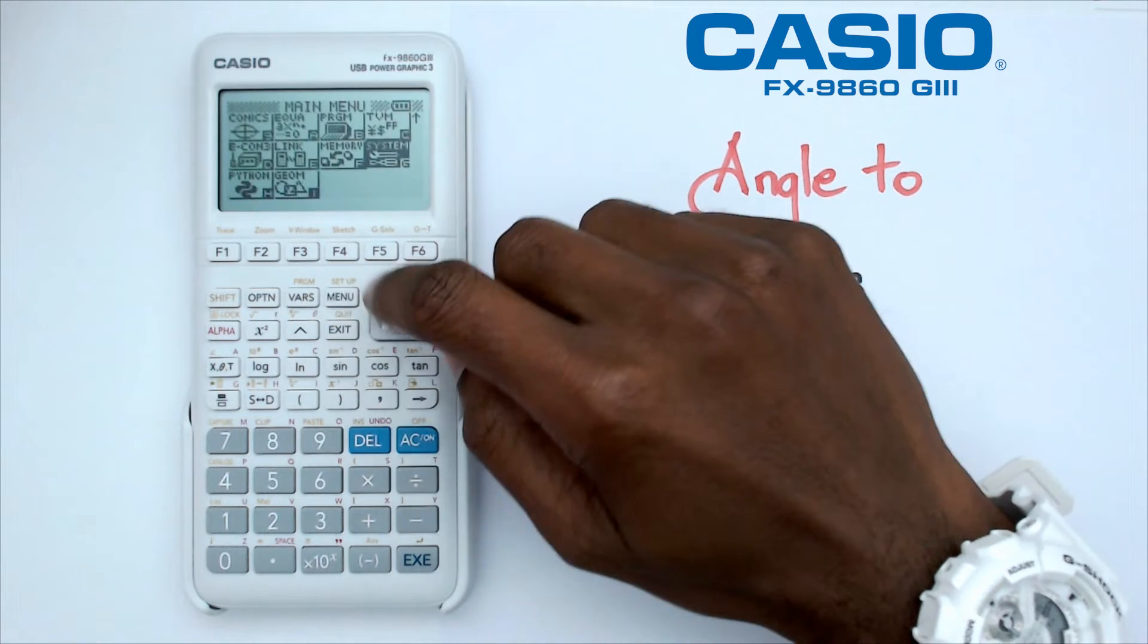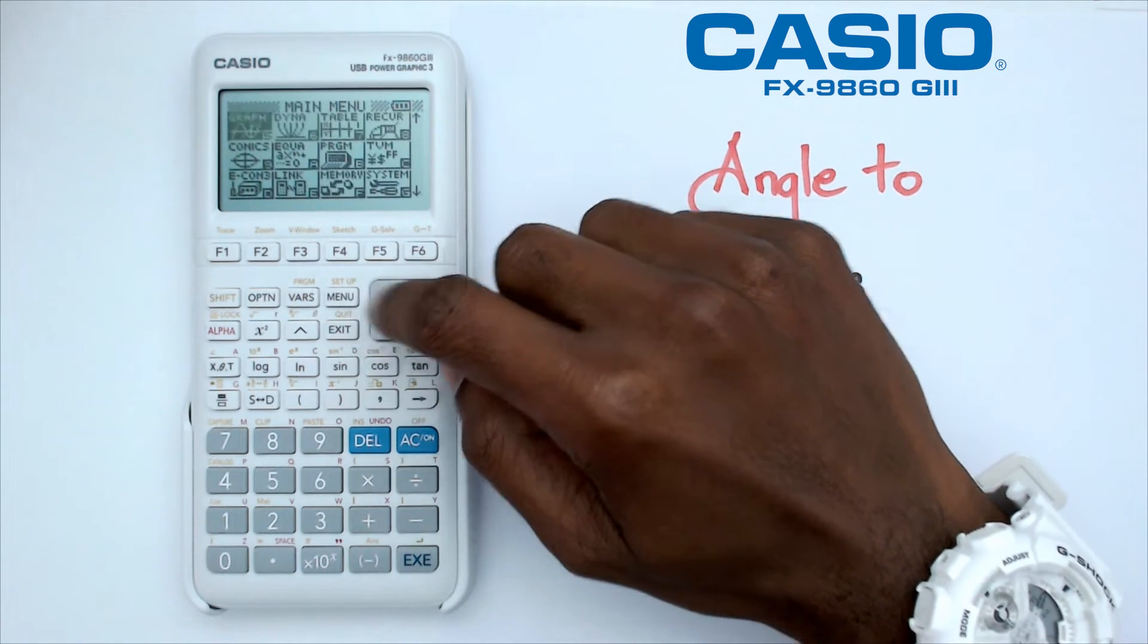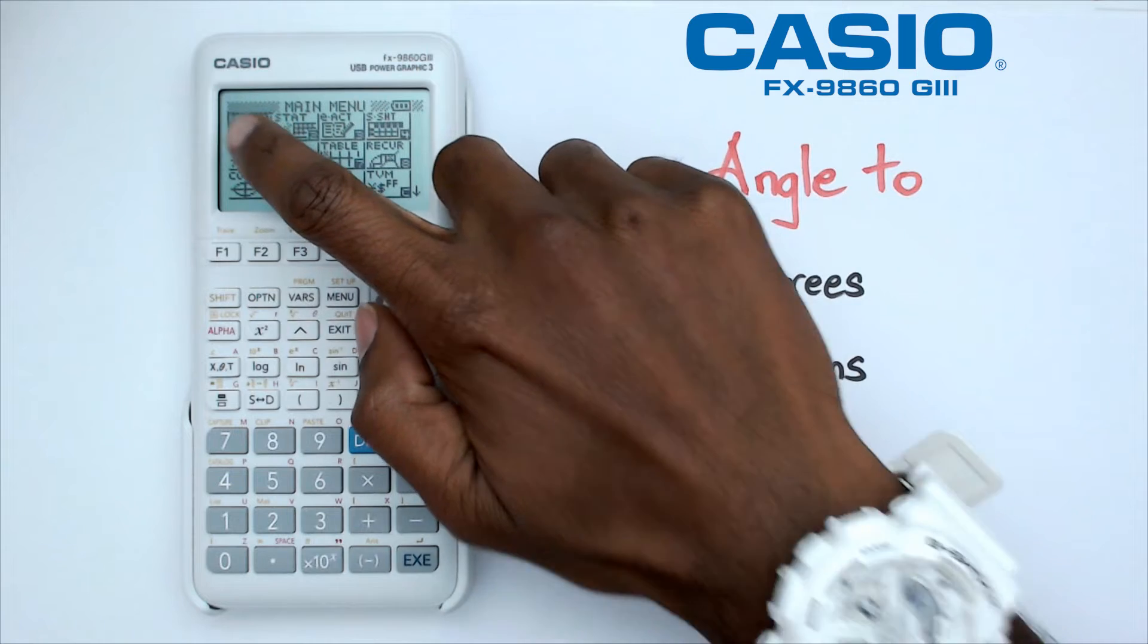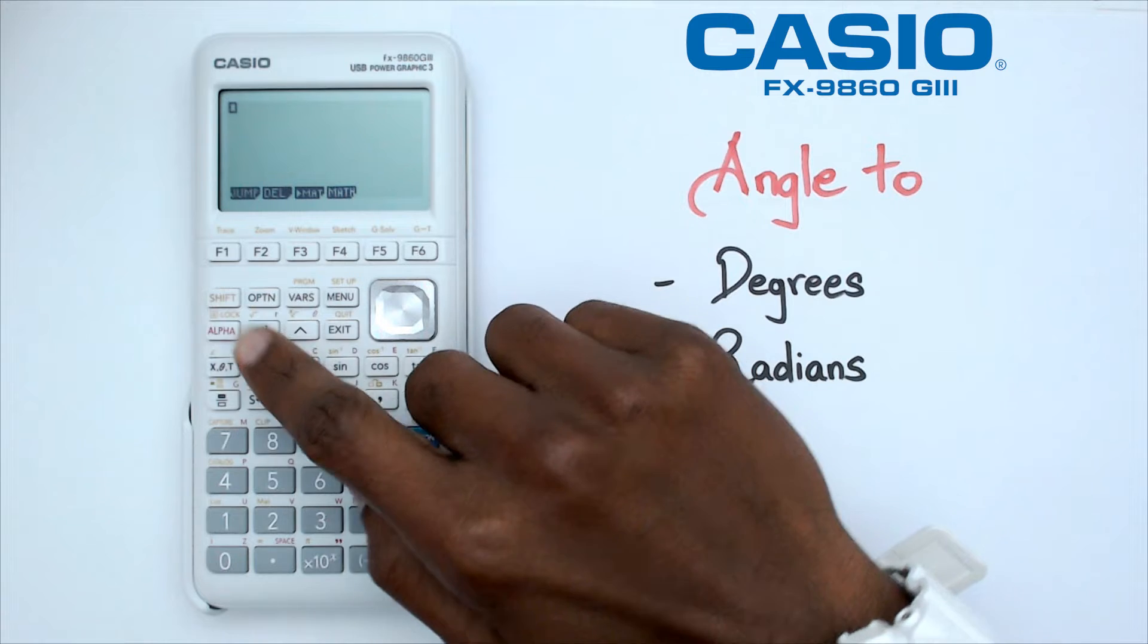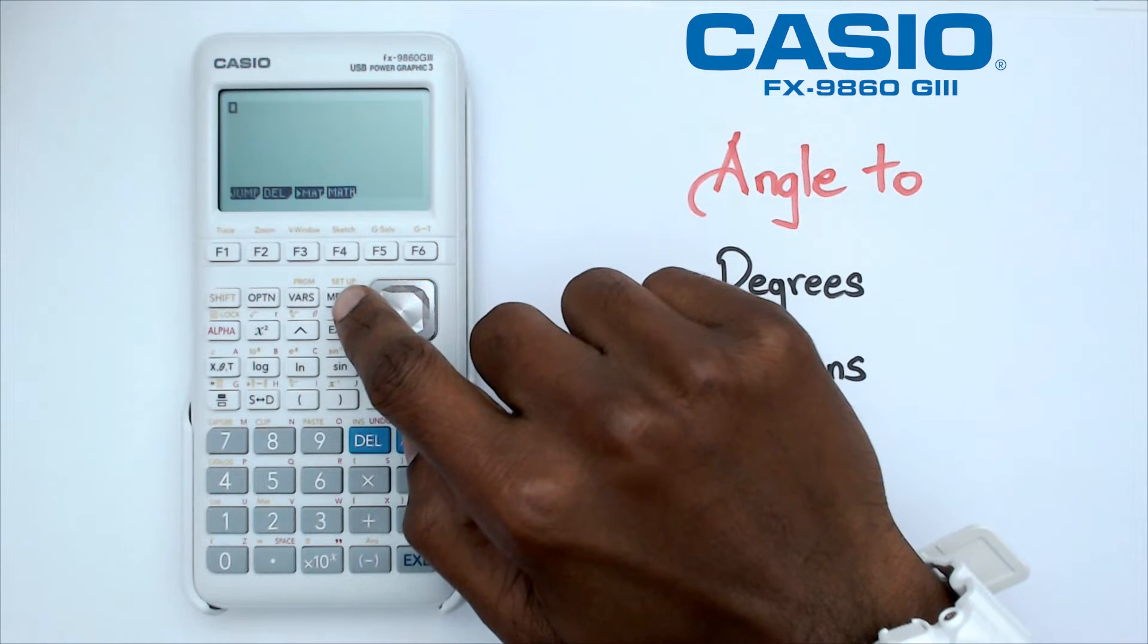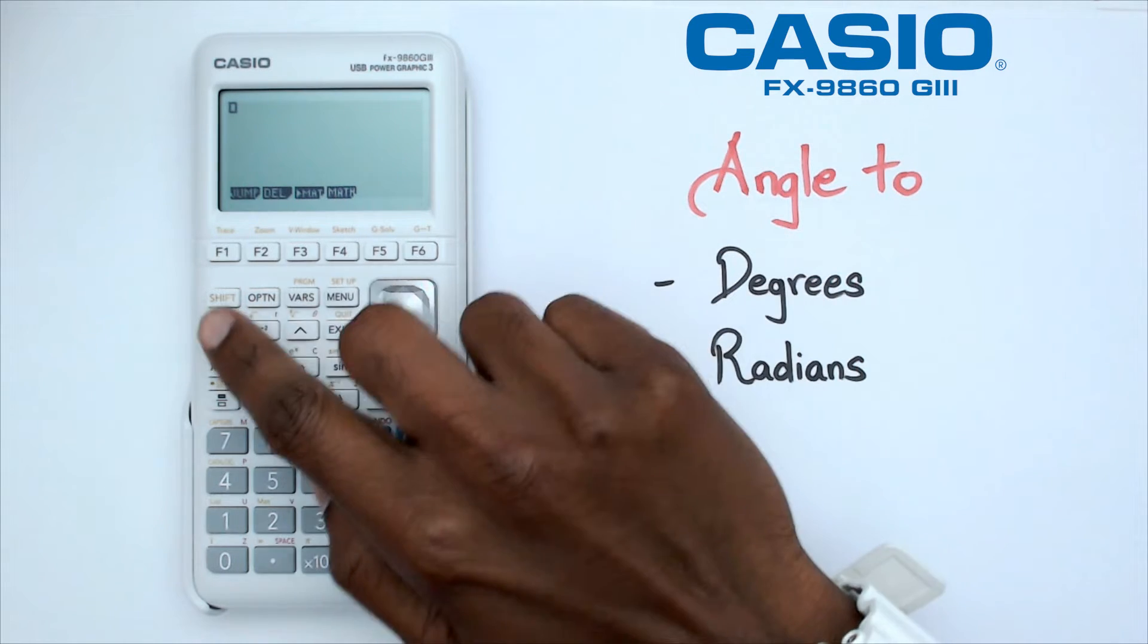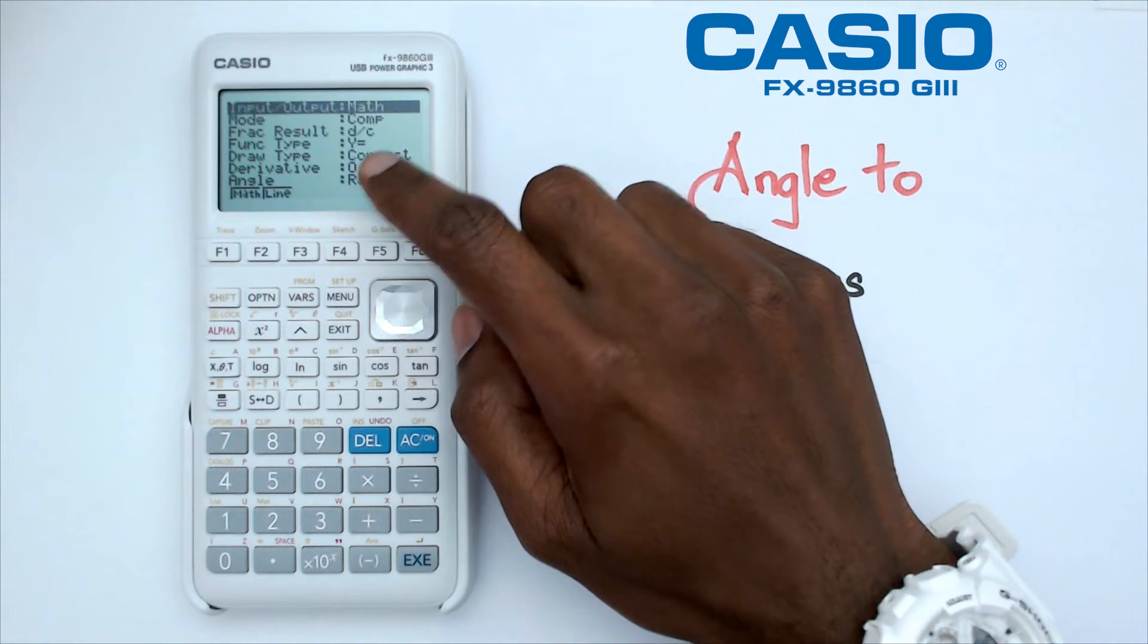So let's go back into the main menu right at the top there and we're going to go into the run menu. We're going to click on EXE. And at this point, what we're going to do is click on shift and menu button because that's got a little setup there. So we're going to click on shift menu. That's going to take you into setup.